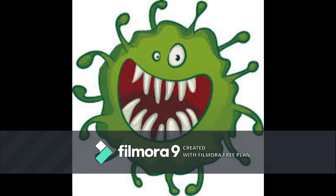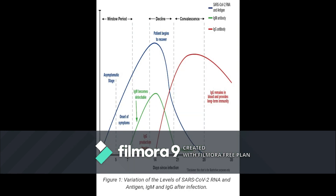Detecting the total antibody panel — including IgG, IgM, and IgA (which is present in mucus surfaces) — may provide better results, especially given that 20–80% of COVID-19 cases are estimated to be asymptomatic.